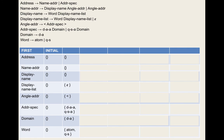Address-specification appears in rules one and five. In rule one, it's the last element, so we add the follow set of address — {$}. In rule five, it's not the last element; the next symbol is the right angle bracket. The first set of right-angle-bracket is {>} — no epsilon — so rule four gives us {>}. Follow set of address-specification = {$, >}.